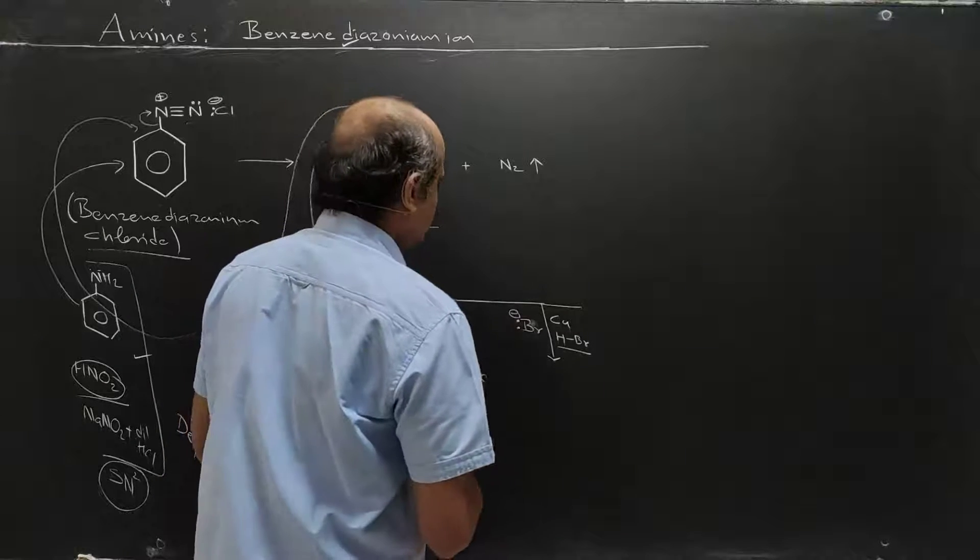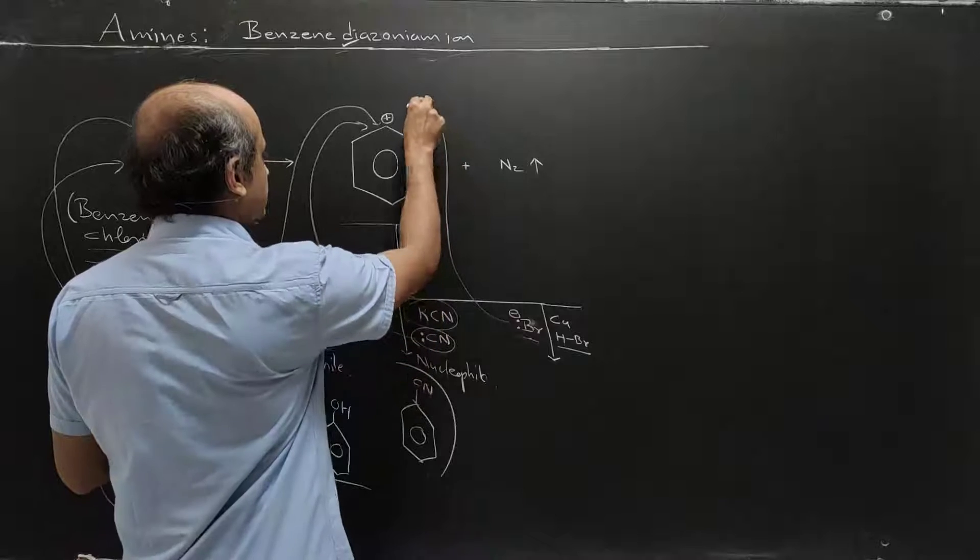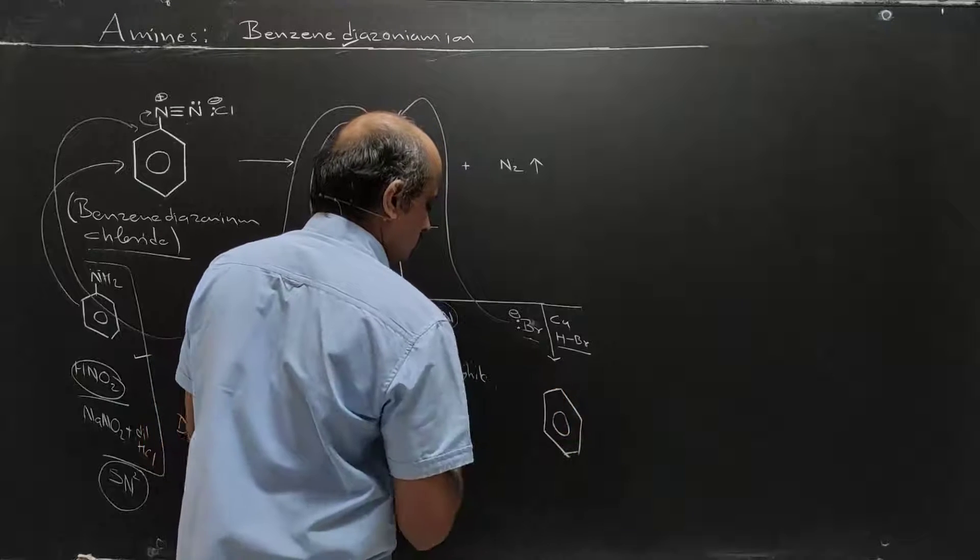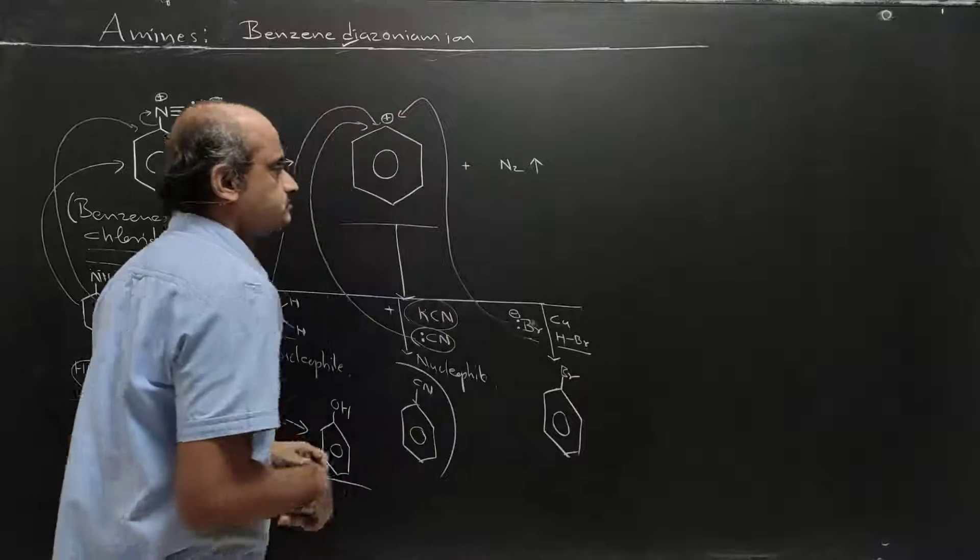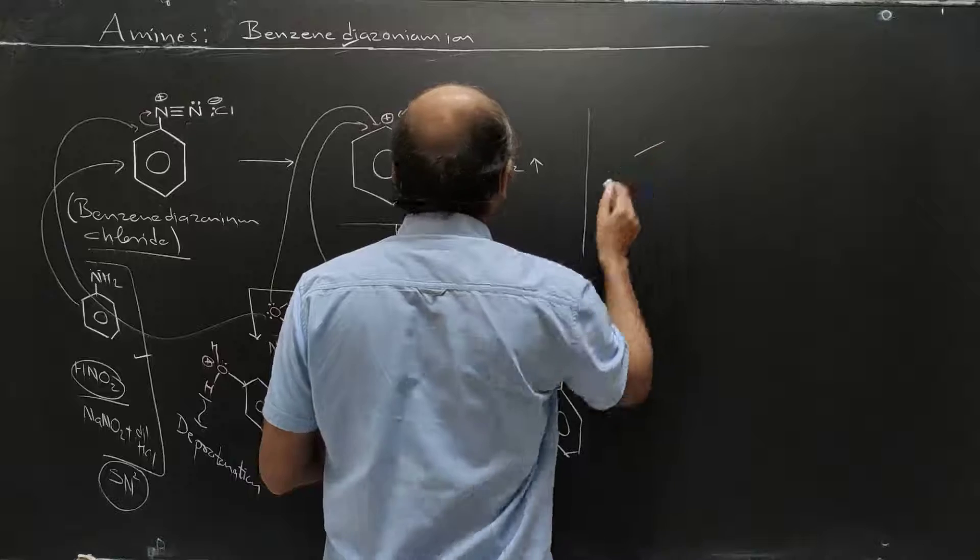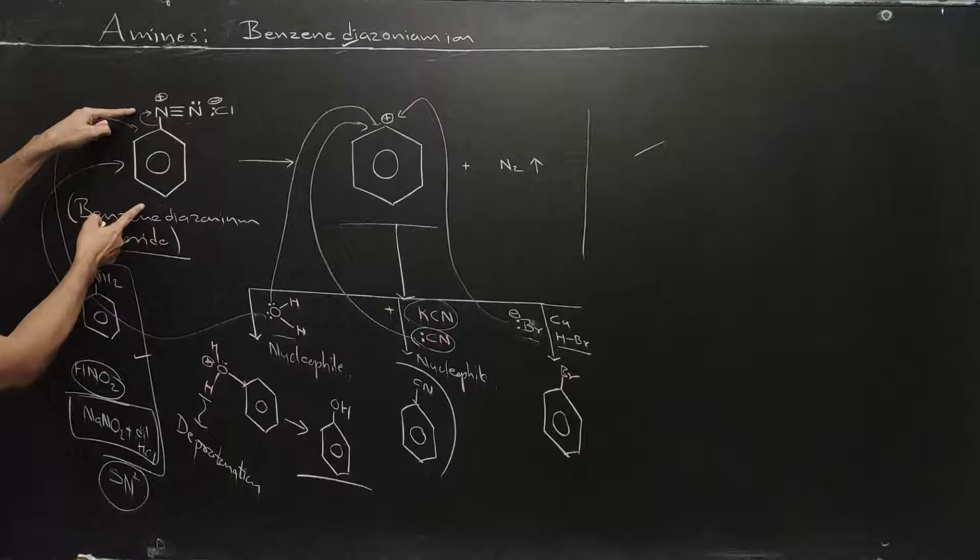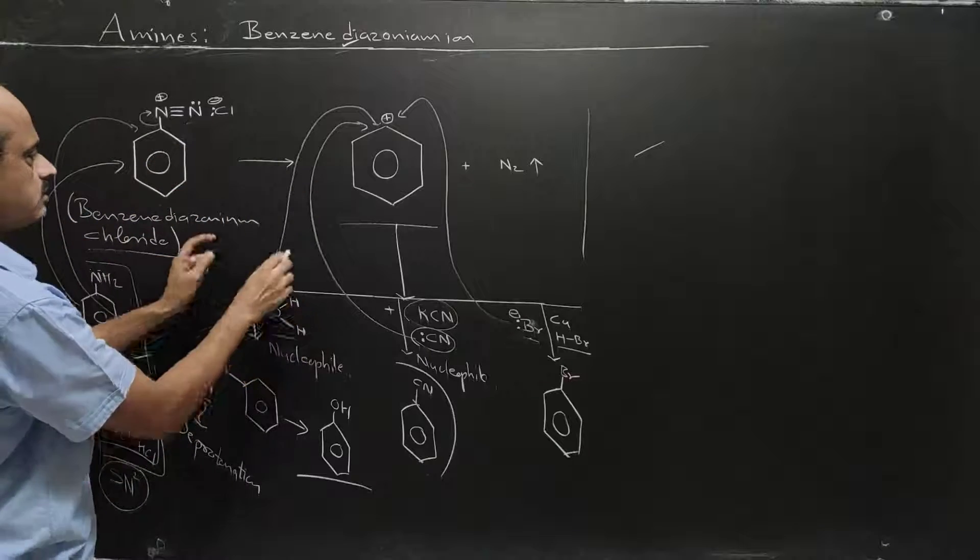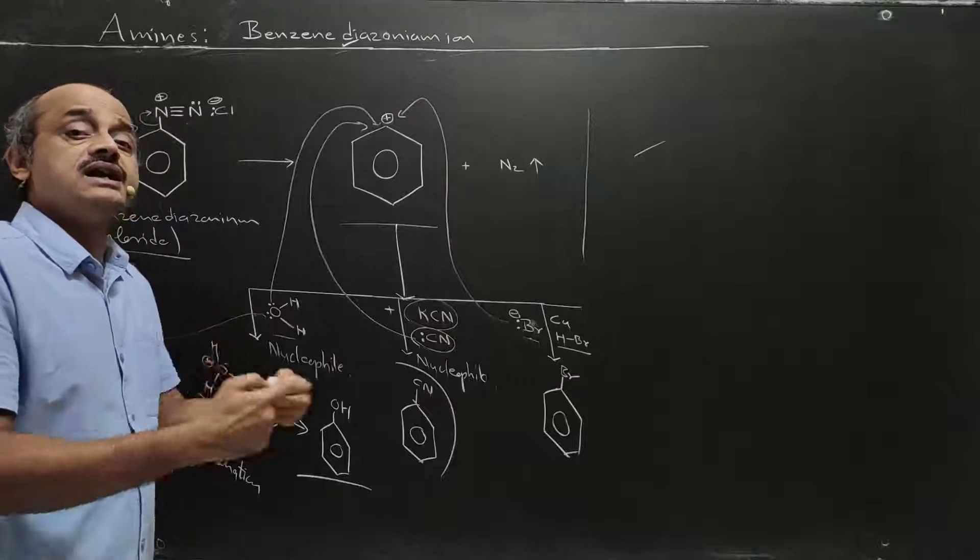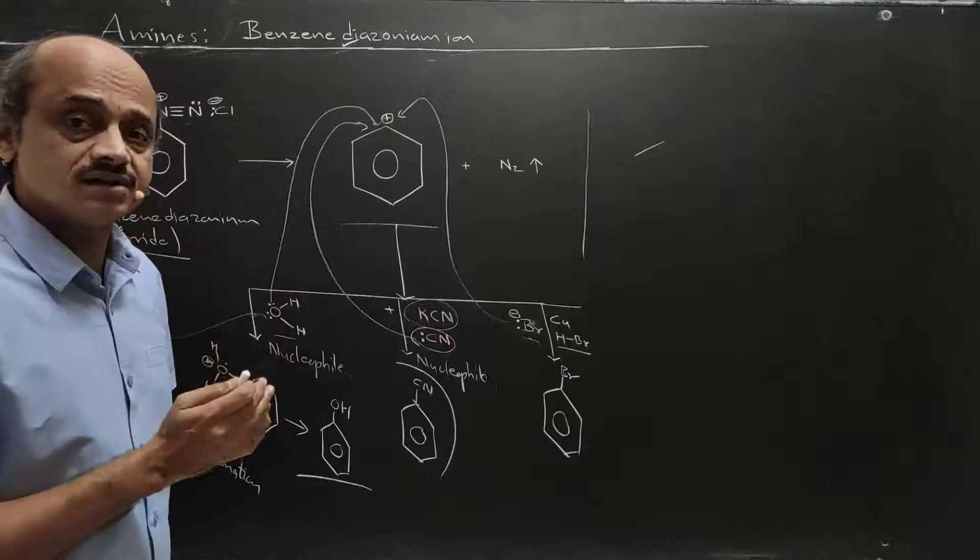Phenol forms here, cyanobenzene forms there. With copper in presence of HBr or copper in presence of HCl, the reaction occurs. Bromine in the form of bromide will attack as a nucleophile, giving bromobenzene. So aniline plus this mixture gives benzene diazonium chloride and then the products under direct conditions.